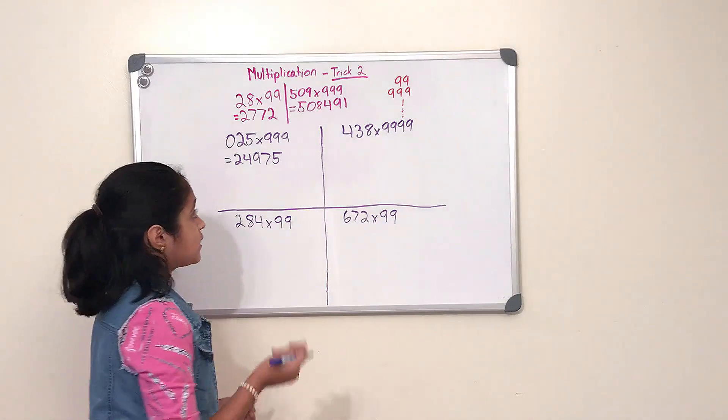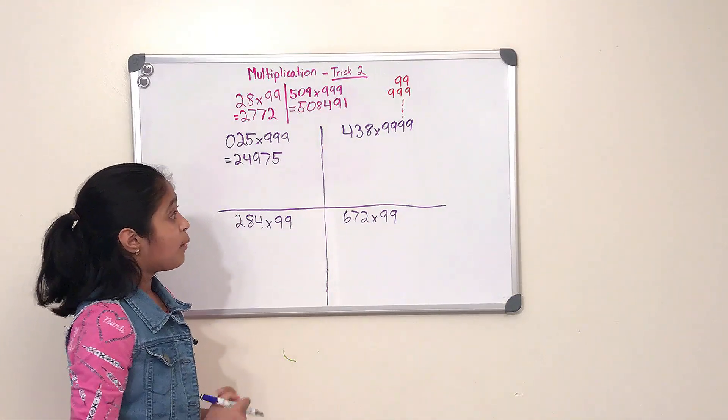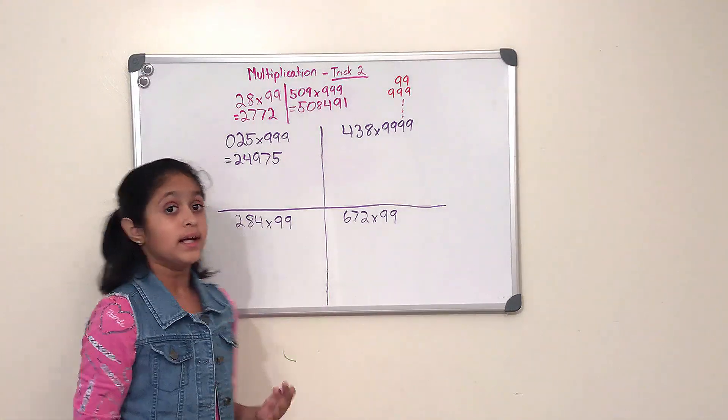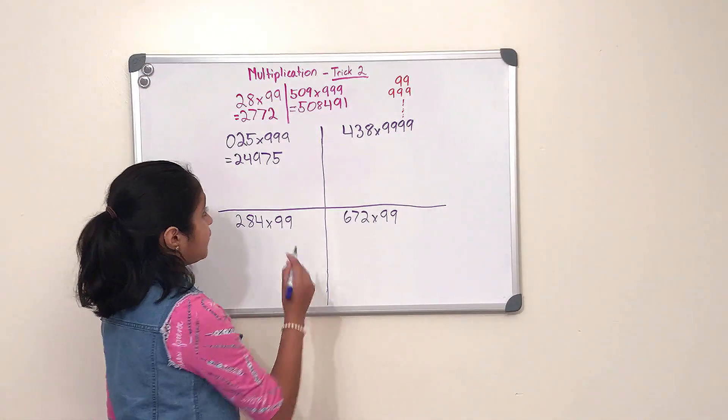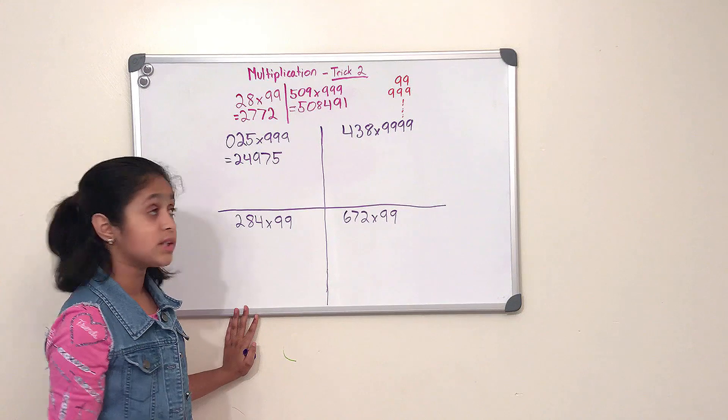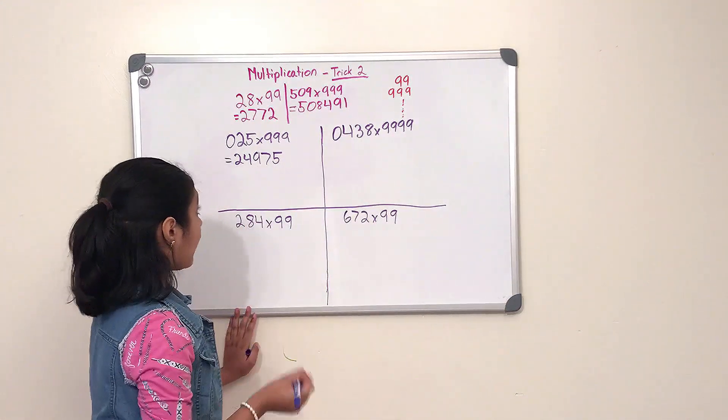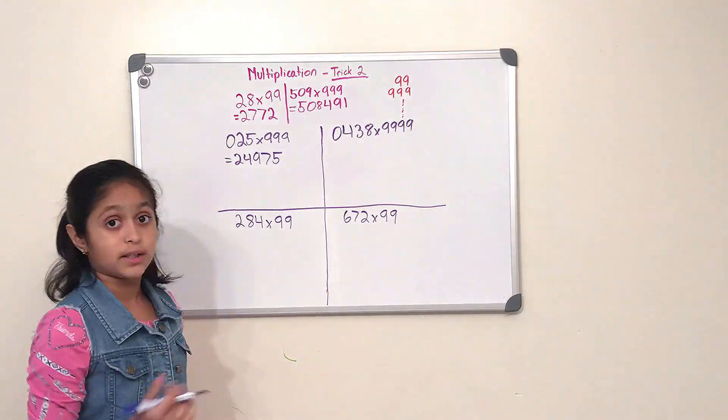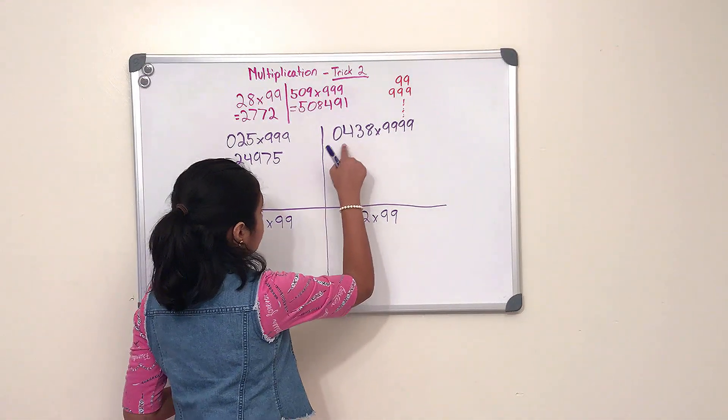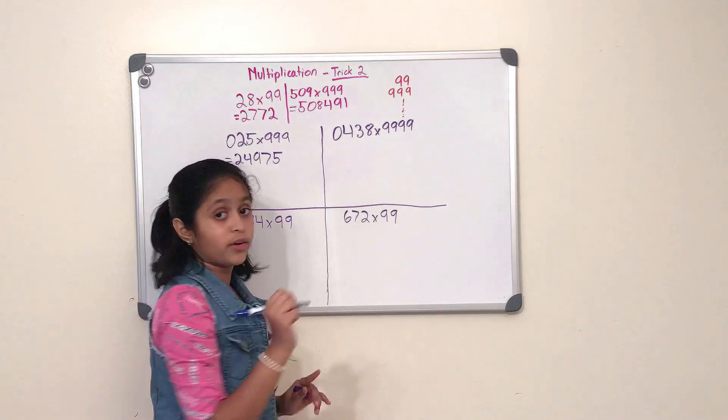So our next problem is to do 438 multiplied by double nine. So our first step is we have to equalize the number of digits to the number of nines. So let's add that zero. Now we have to do the same steps as trick number one, so we're gonna do 438 minus 1, and that would be 437.